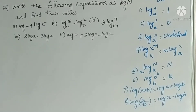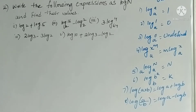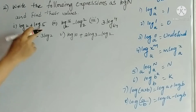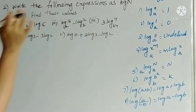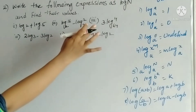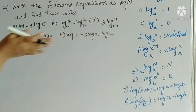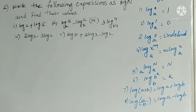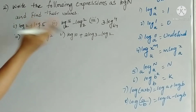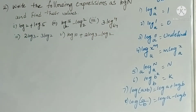Hello students, welcome to my channel. Today we are going to solve the second problem in exercise 1.5 of real numbers. The problem says: write the following expressions as log n and find their values. We observe that in each problem there are two or three terms separated by plus or minus, and we should express them as a single term, log n, and find their values if possible.